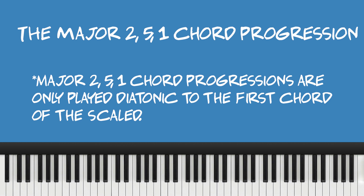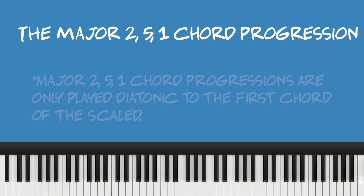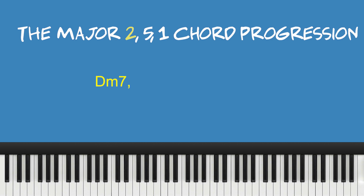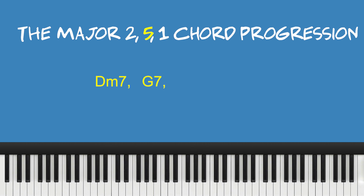Generally speaking, if a 2-5-1 chord progression resolves to a major chord, it's a major chord progression. For example, a major 2-5-1 chord progression — the formula would be a minor seven as the two chord, to a dominant five chord, back to a major chord or a C major seven.